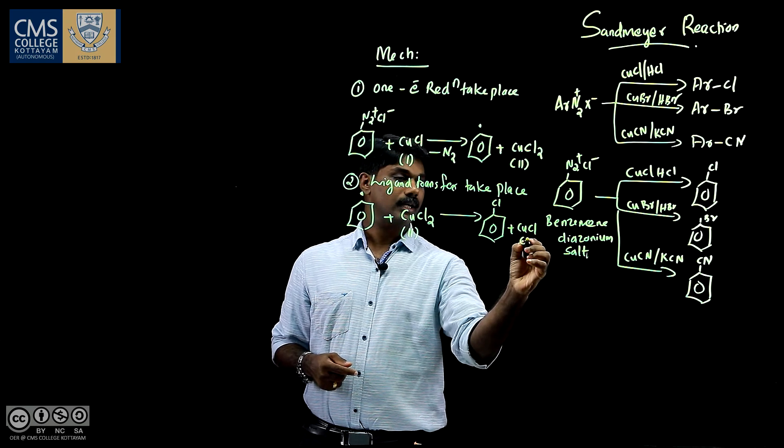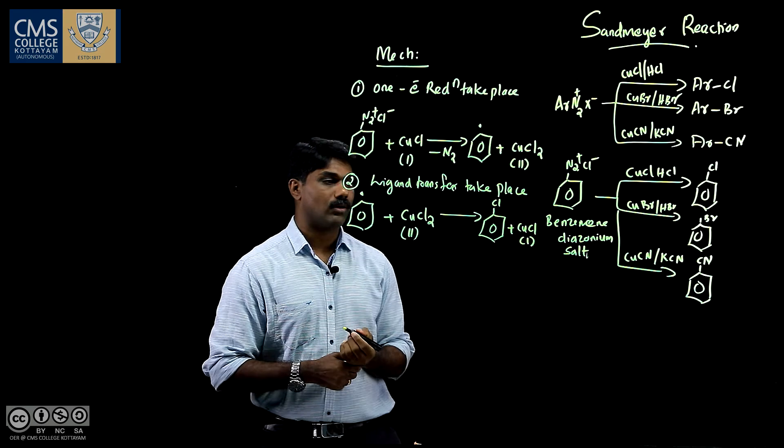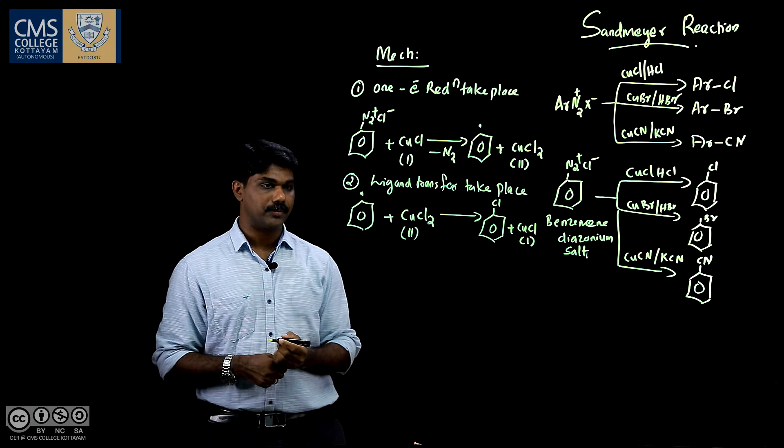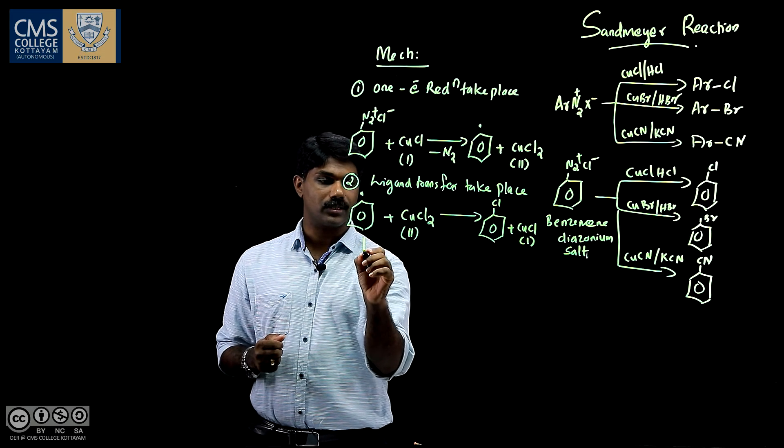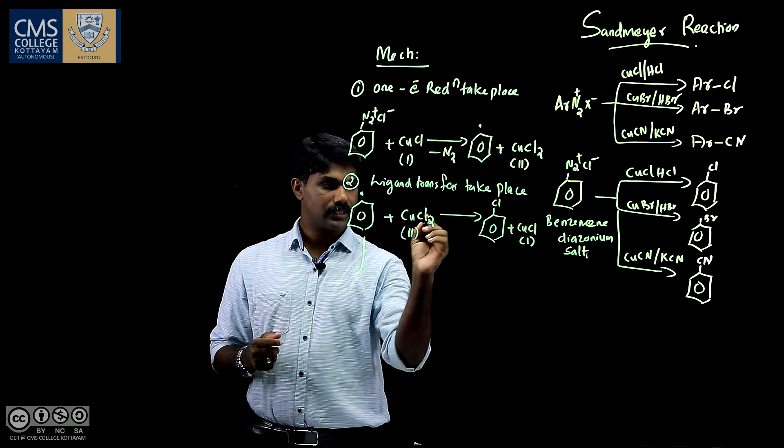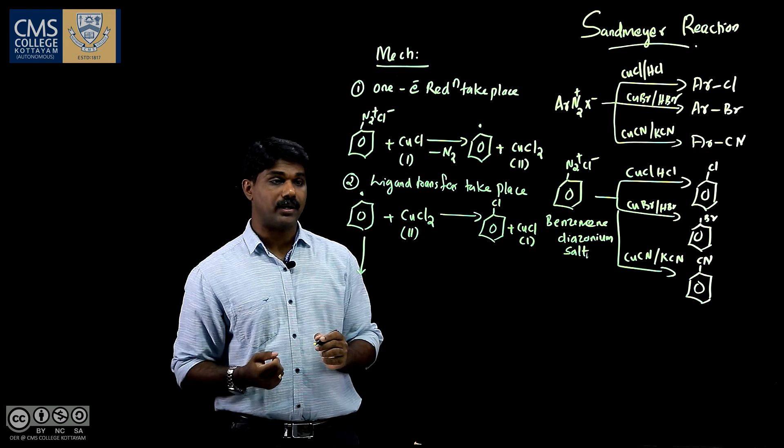So in CuCl2, the oxidation state is +2. And in CuCl, the oxidation state is +1. This phenyl radical can again convert into the same product via different pathway.